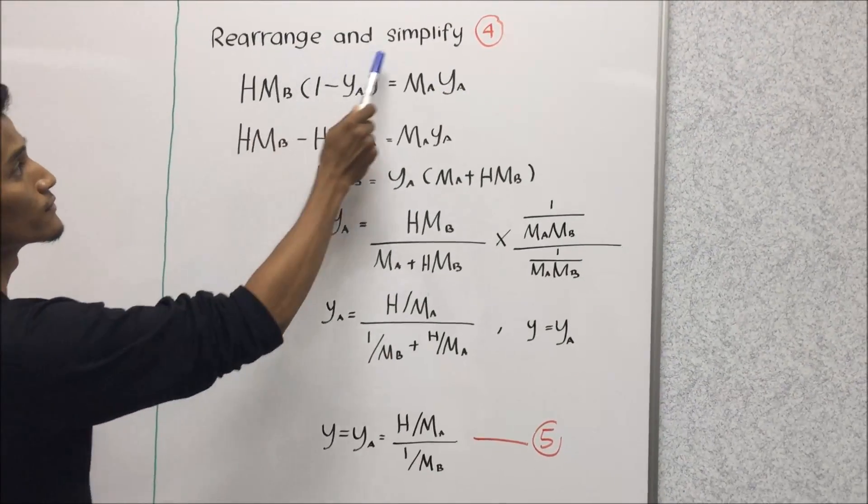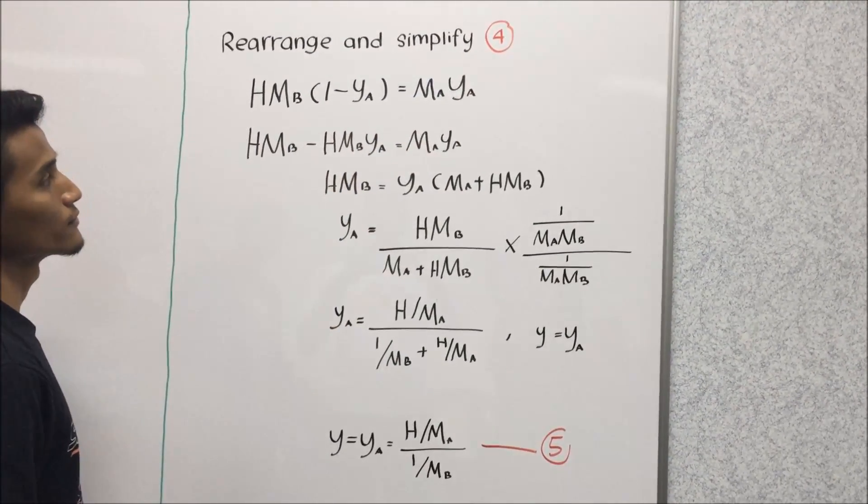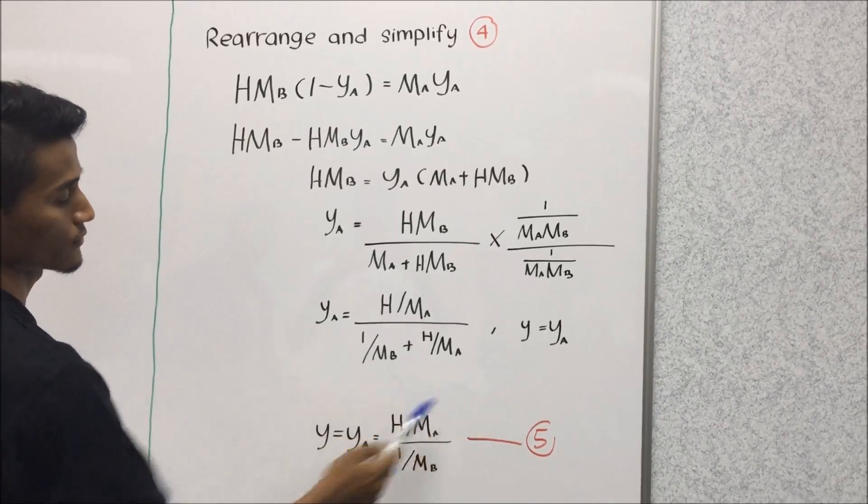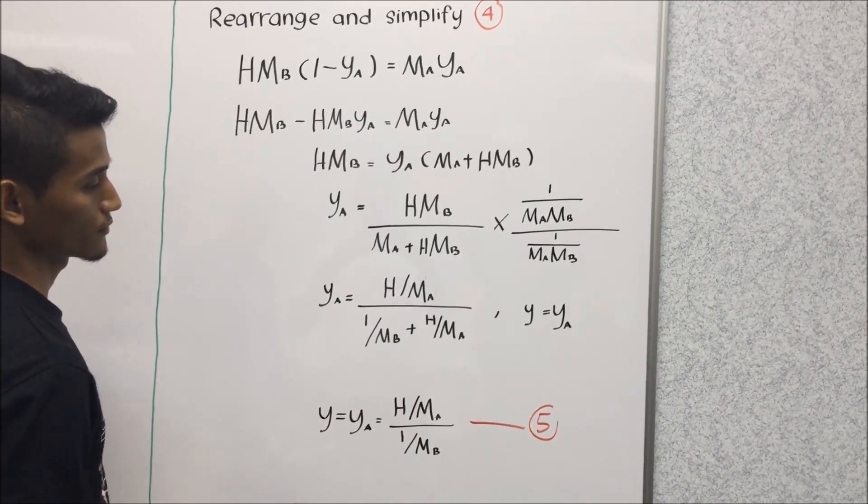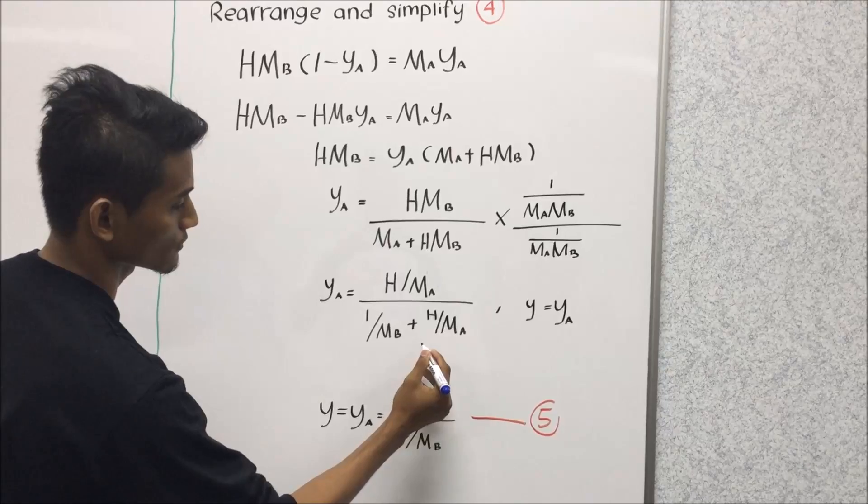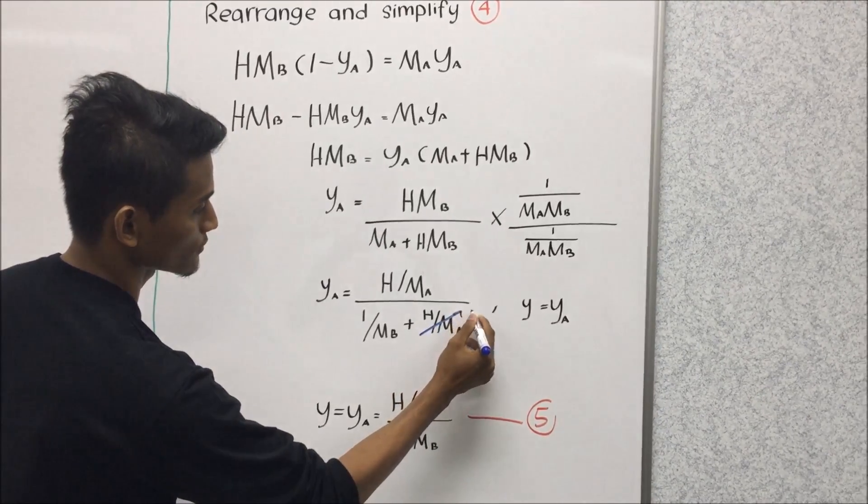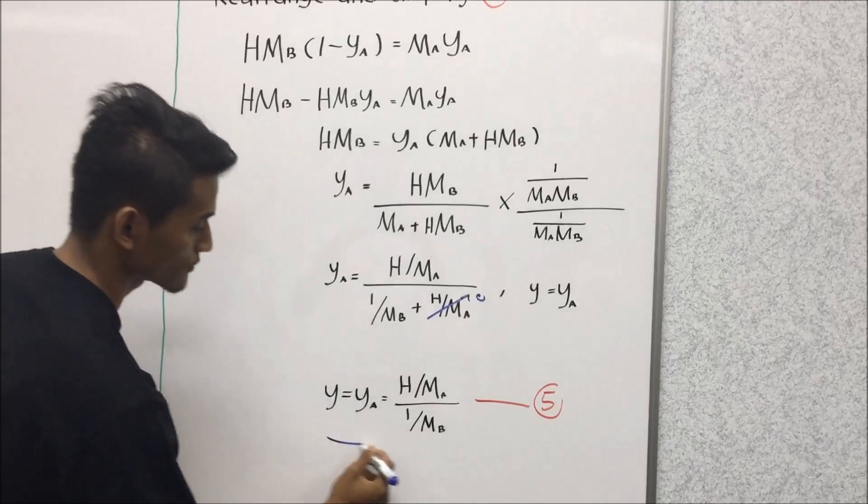Next we rearrange and simplify equation 4. Then we will get this equation. The value of h over NA was too small compared to 1 over NB. Therefore it can be neglected. Then we will get equation 5.